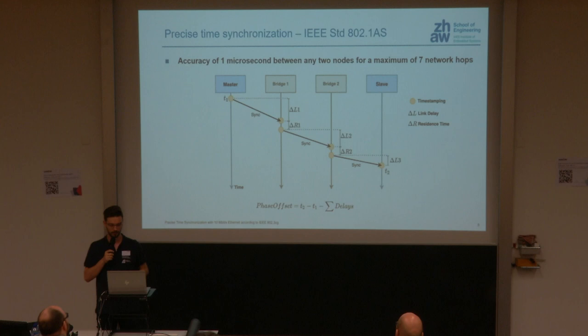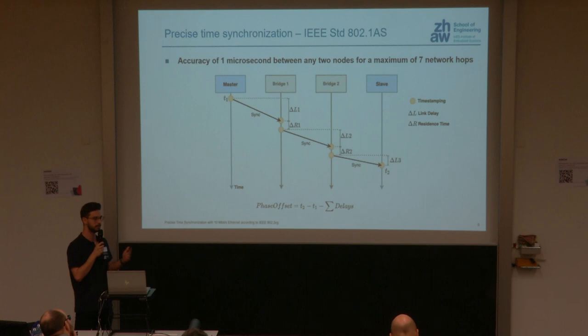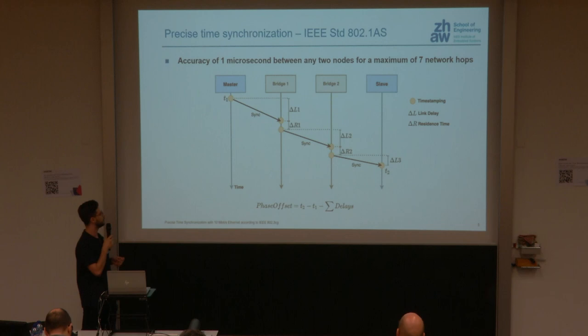Precise time synchronization is mainly done with gPTP — IEEE standard 802.1AS — a simplification of 1588 for time-sensitive networking. It aims to achieve one microsecond accuracy between two nodes over a maximum of seven hops. As a short example with four devices: the master on the left has the correct time, and the slave on the far right wants to synchronize its time to the master.